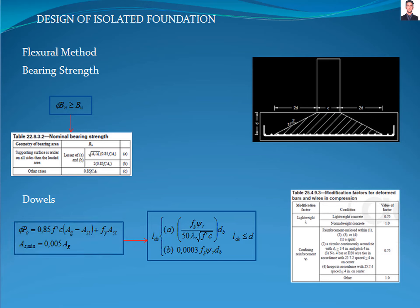Now we calculate the development length of the dowels, which shall be the greater of these equations. Lambda and psi symbols are obtained from tables 25.4.9.3 of the ACI 318 standard, and the development length shall be less than D.